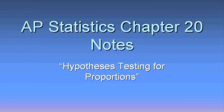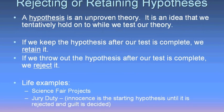Today we're going to go over chapter 20, which is about hypothesis testing for sample proportions. A hypothesis is an unproven theory — an idea that we tentatively hold on to while we are testing out our theory. If we choose to keep it after our test is complete, we are retaining the hypothesis. If we throw it out after our test is complete, we are rejecting it.